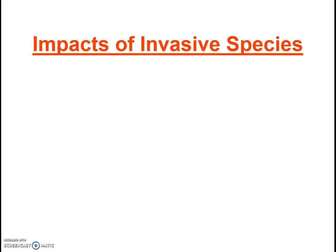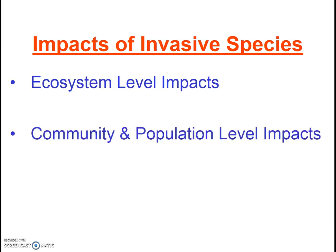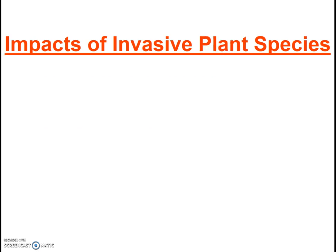Harm caused by invasive species can be at the ecosystem level or at the community or population level. Let's look first at ecosystem-level impacts. The examples I'm going to give are for an invasive plant species, but you can imagine also how invasive animals might impact a local ecosystem.